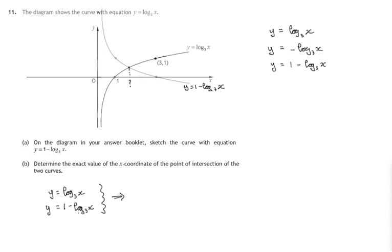So log to the base 3 of x must equal 1 minus log to the base 3 of x. Let's solve this equation. Add log to the base 3 of x to both sides. We'll get two of them on the left and this one will disappear. Divide both sides by two. And we have log to the base 3 of x equals 1 half.